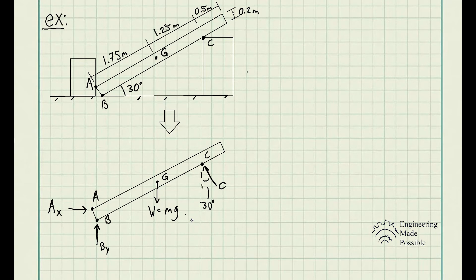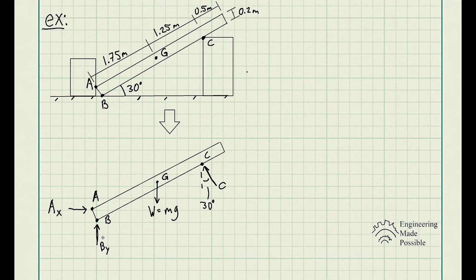This is the free body diagram for this problem. It's straightforward to determine where to apply the weight — always at the center of mass — but for reactionary forces, you need to know what kind of support you have to determine the angle and direction of those forces, whether it's just a normal force, only a Y component, or both X and Y components. Let's go ahead and do another example.